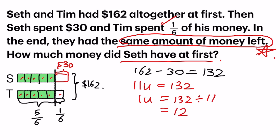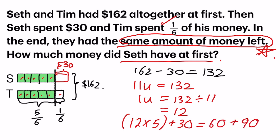Let me check my calculation — 132 divided by 11, yes, that's 12. So the question was: how much money did Seth have at first? Looking at the model, he had five green units plus that $30. So my final step: 12 times 5 gives me 60 for the five green units, then I add back the $30 that he spent. So 60 plus 30 equals 90. And that's the answer — $90.